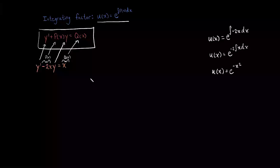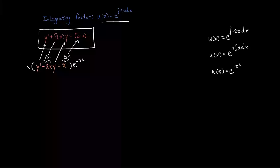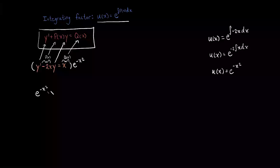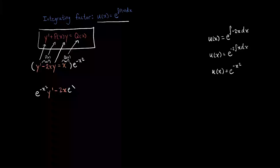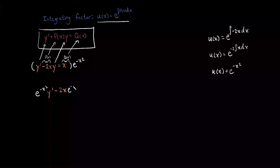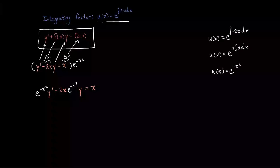Now that we've found our integrating factor, the next step is to multiply the whole equation by e^(-x²). If we do that, what we end up getting is: e^(-x²) · y' minus 2x · e^(-x²) · y, equal to x · e^(-x²).